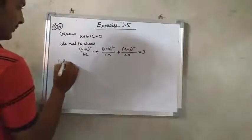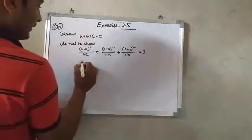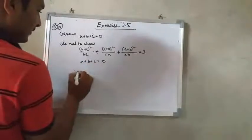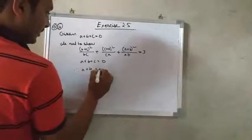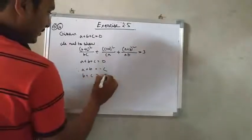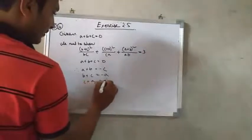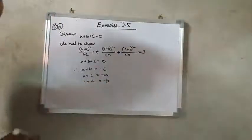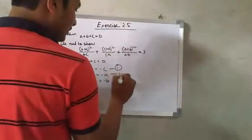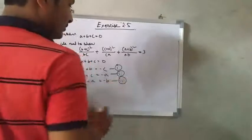Taking the left hand side. We are given A plus B plus C equals 0. Therefore, A plus B is equal to minus C — equation 1. B plus C is equal to minus A — equation 2. C plus A is equal to minus B — equation 3.